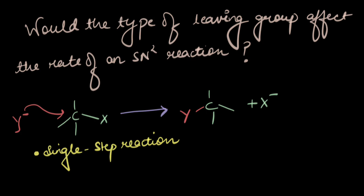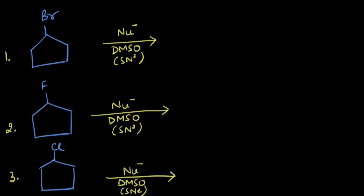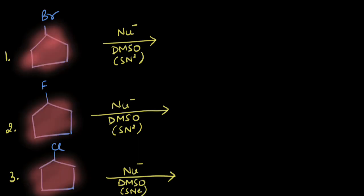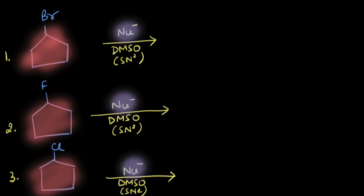Let's take up a few problems to understand this better. In this question, we are given three reactions and we have to compare their rates towards an SN2 mechanism. The substrate apart from the leaving group is the same in each case, and the attacking nucleophile is also the same in each case.